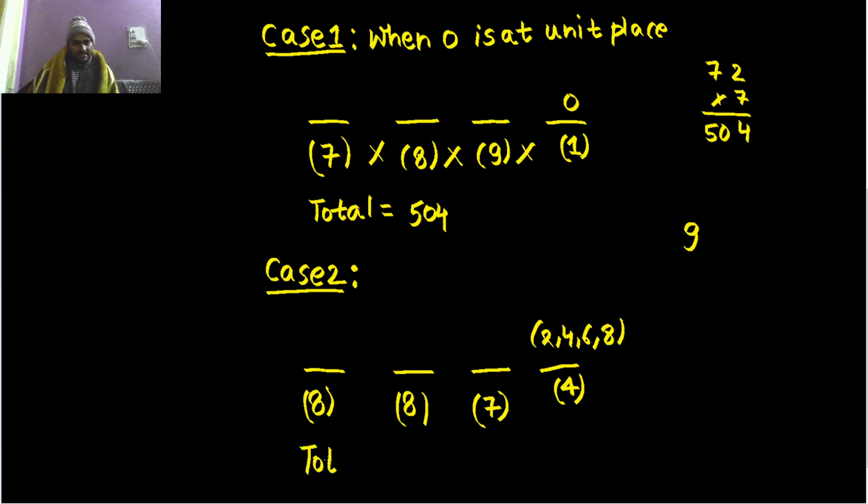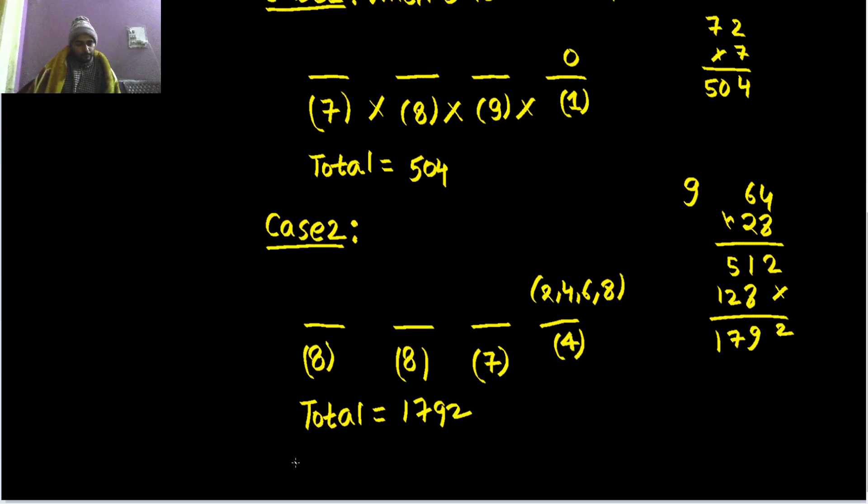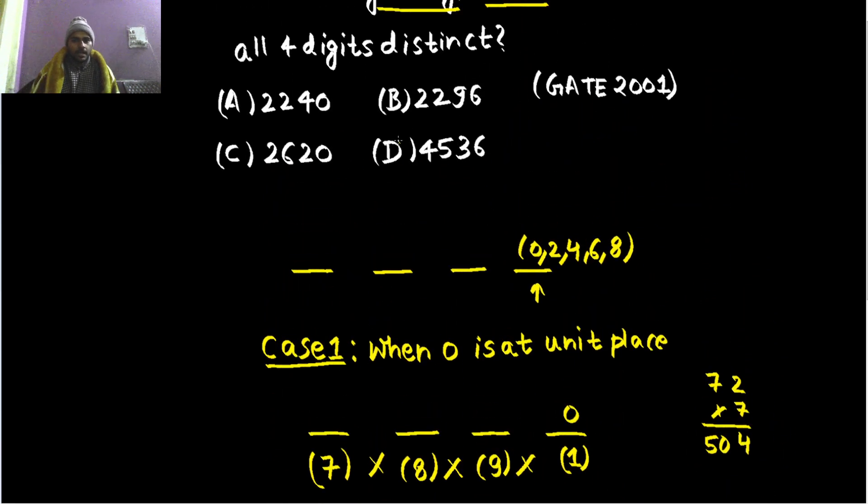So how many possibilities from this case? We are getting 4 into 8 into 8 into 7, which gives you 1792. Now, finally, all possible numbers can be formed by adding all the 2 cases, result from all the 2 cases. So this will give you 2296, which is clearly your B option.